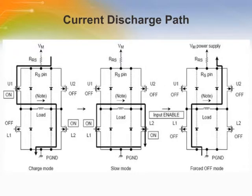This slide shows the current discharge path when the enable input is active during operation. The output transistor has parasitic diodes. To discharge energy from the coil, each transistor is switched on, allowing current to flow in the reverse direction to that in normal operation. As a result, the parasitic diodes are not used. If all the output transistors are forced to switch off, the energy of the coil is discharged via the parasitic diodes.